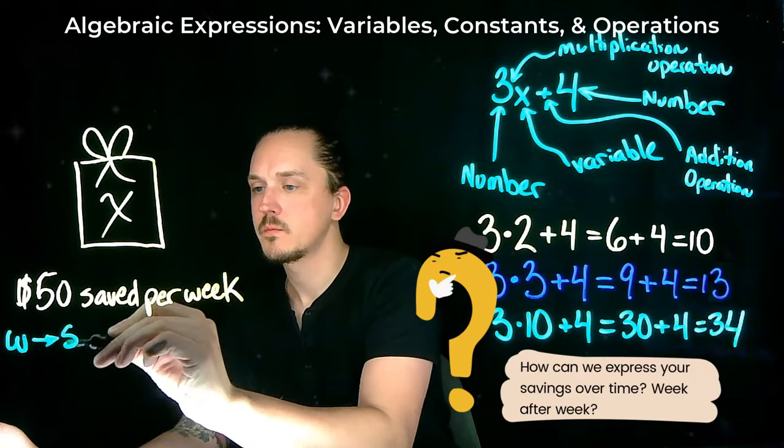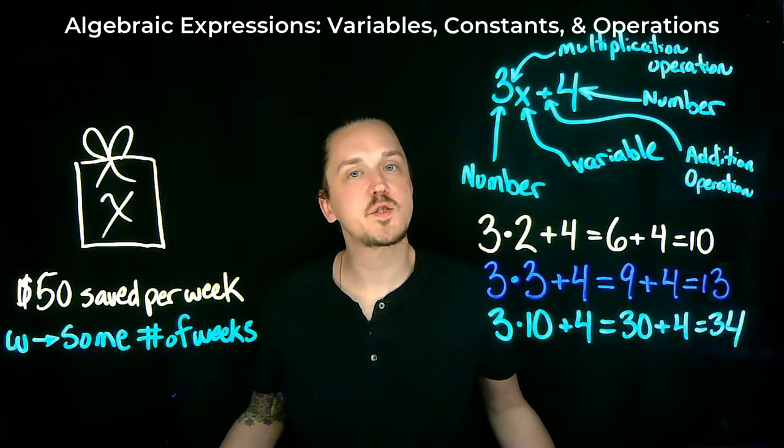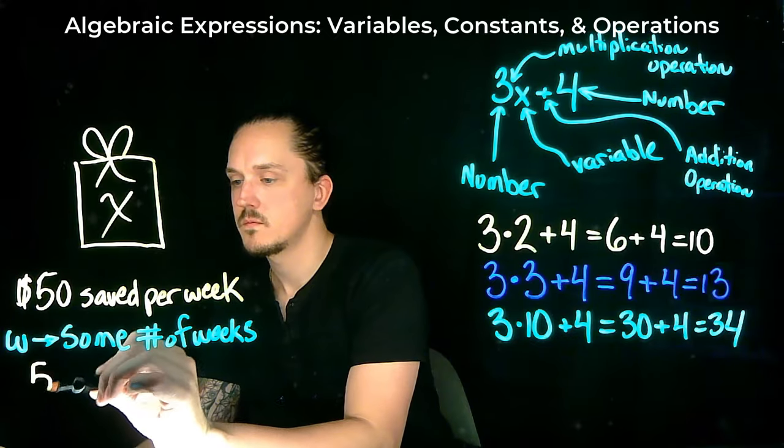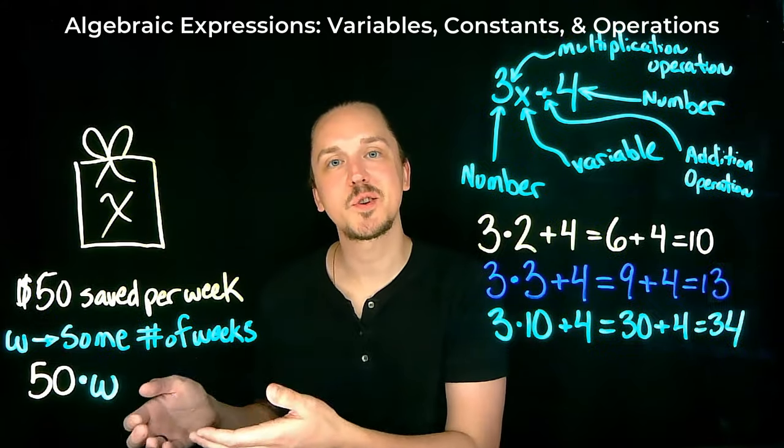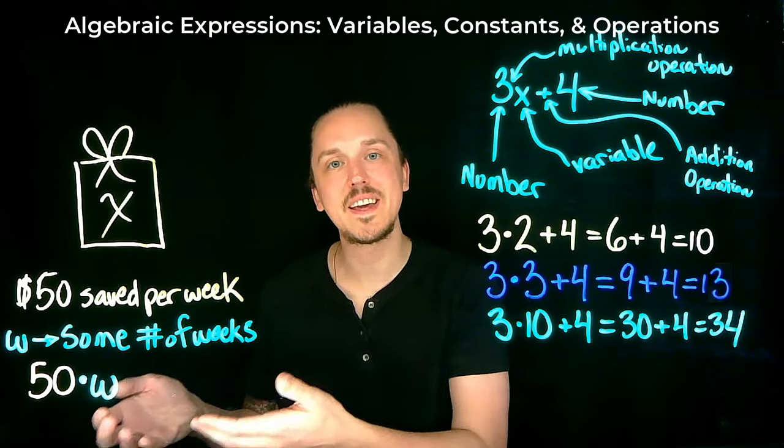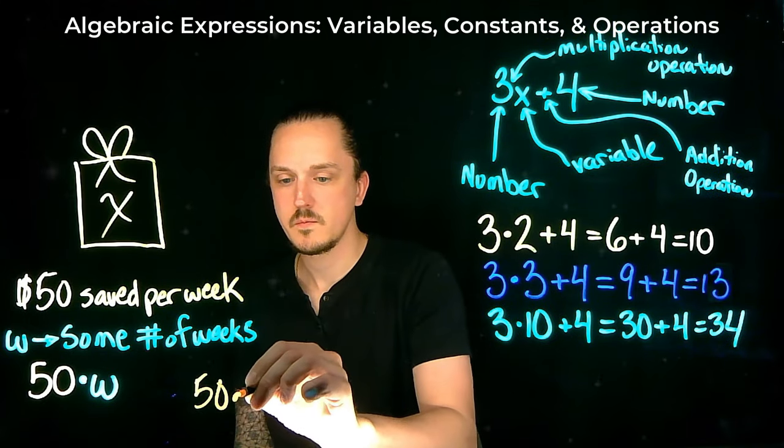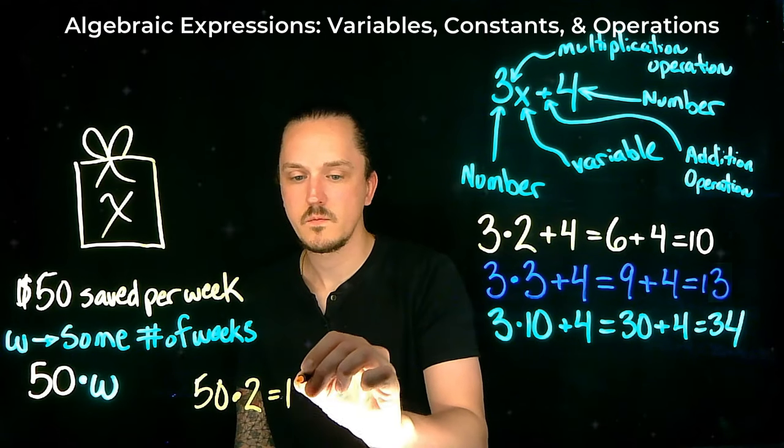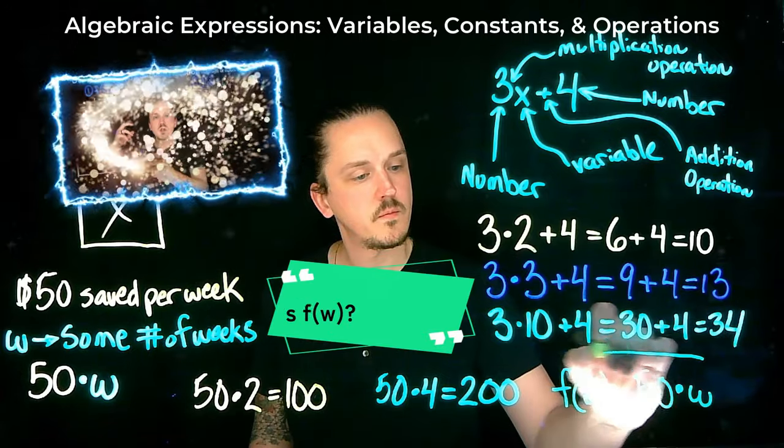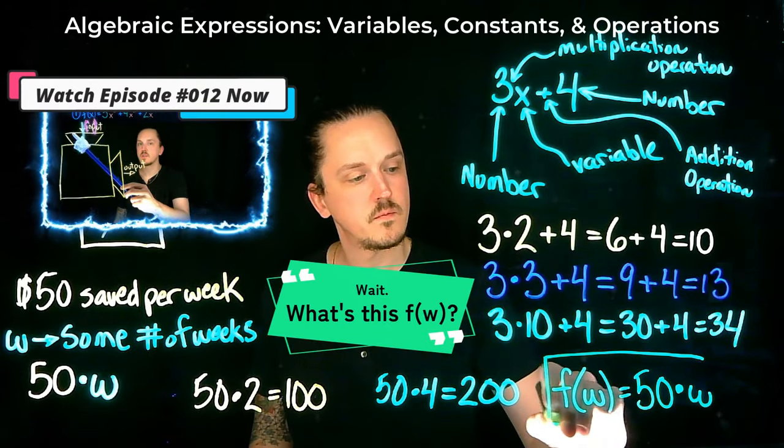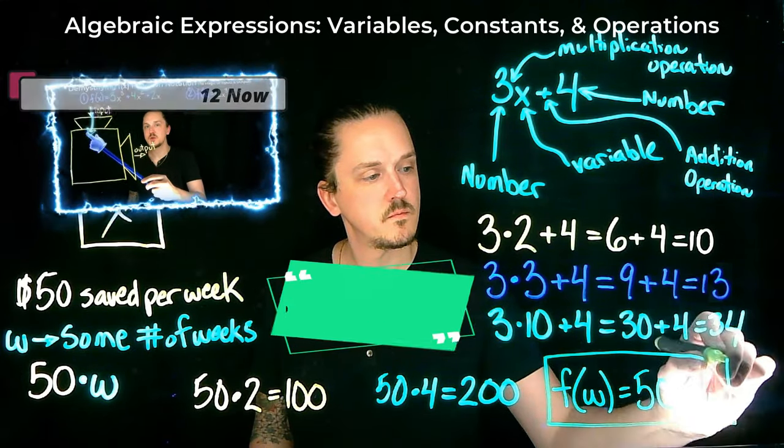What do you say we use the variable W to represent some number of weeks? The algebraic expression would be the number 50 multiplied by the variable W. This expression tells us your savings after any given week. With the beauty of algebra, we can determine how much you'll have saved in 2 weeks, 4 weeks, and any number of weeks, just by including variables like W, which can potentially represent any number.